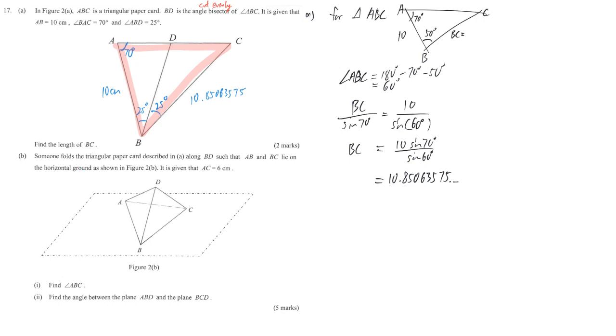Now the problem is part B. We fold this paper along BD, and then it comes up. And then A, B and C keep remain on the ground, like the graph here. And then they say that the distance between these two points, the straight line is become 6cm. We are going to find out angle ABC here.